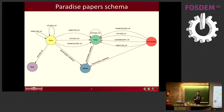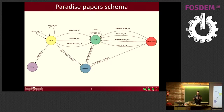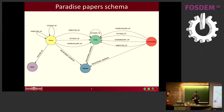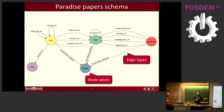The schema of the graph is rather simple. You have entities connected to officers; they have intermediaries to do their business deals. Many of these objects can be registered to a certain address. This graph schema has node labels and edge types.